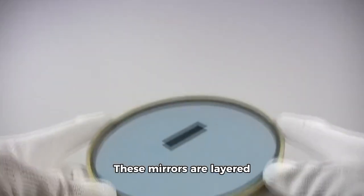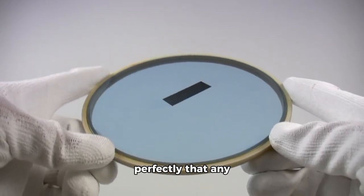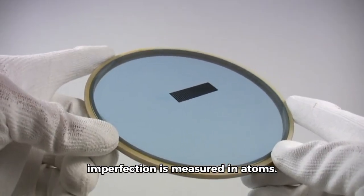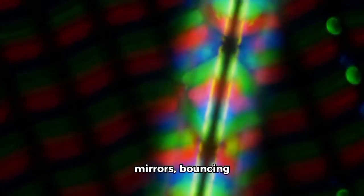These mirrors are layered with molybdenum and silicon, polished so perfectly that any imperfection is measured in atoms. Light reflects through a complex system of these mirrors, bouncing precisely until it carries a transistor pattern toward a silicon wafer.